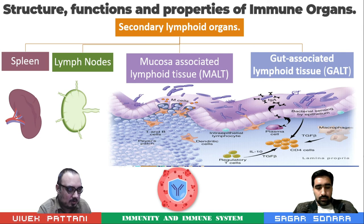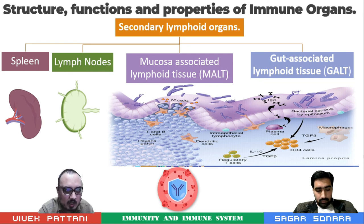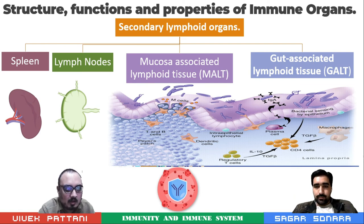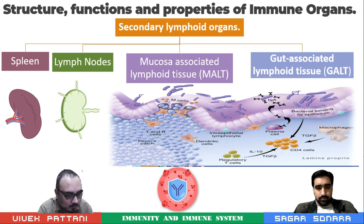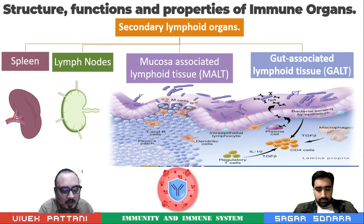Now comes the secondary lymphoid organs: spleen, lymph nodes, MALT and GALT. Lymph nodes are small bean-shaped organs divided into cortex, medulla and paracortex. The cortex contains lymphoid follicles of two types: primary lymphoid follicles, present before antigenic stimulus, smaller and containing resting B cells; and secondary lymphoid follicles, formed following contact with an antigen and containing activated B cells such as plasma cells and memory B cells.